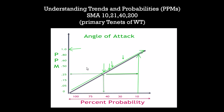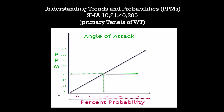Right now, the angle of attack — this is what it's about. The PPMs are attached to the 10, 21, and 40. PPM 1 is tied to the 10-period moving average. PPM 2 is the 21-period moving average. PPM 3 is the 40-period moving average. And in certain circumstances, we do use the WaveTech 200, which is tied to the 200-day moving average. These are all the basic concepts involved in understanding at least the angle of attack. Each one tells us the probability, for whatever that moving average value is, of the market declining below it — or in a downtrend, the probability of rising above it.